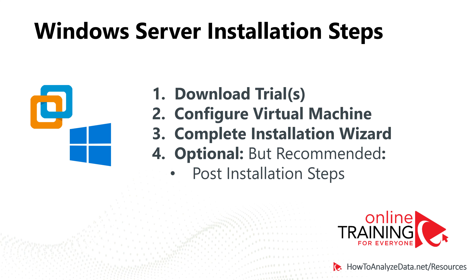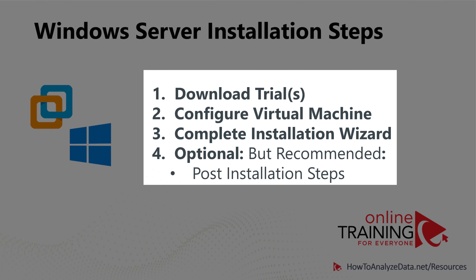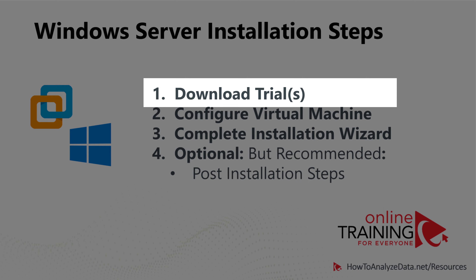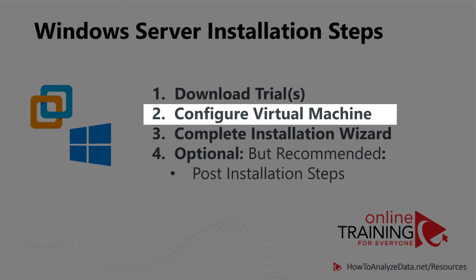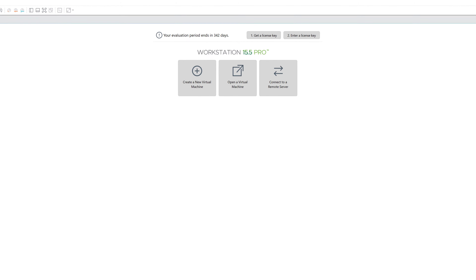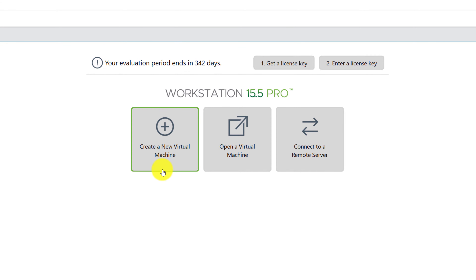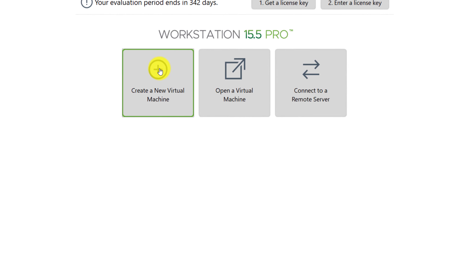You can complete a Windows Server installation in four steps — the fourth step is optional but recommended. You start by downloading trials: if you don't have a virtualization environment, try VMware Workstation Pro or other available software, and download the Microsoft Windows Server trial. For this demo, I downloaded an ISO file. In step two, you configure the virtual machine by going step-by-step through the virtual machine creation wizard. To start, click the 'Create New Virtual Machine' button.